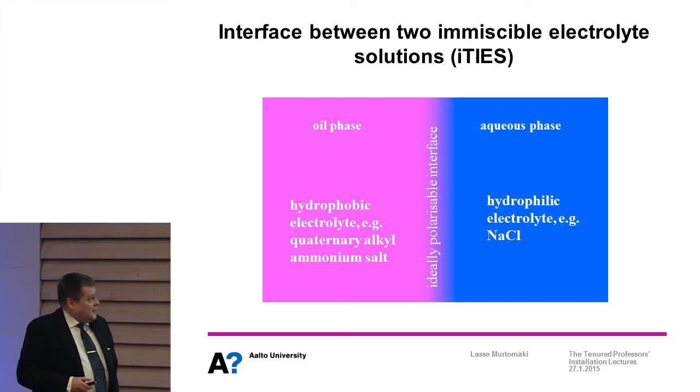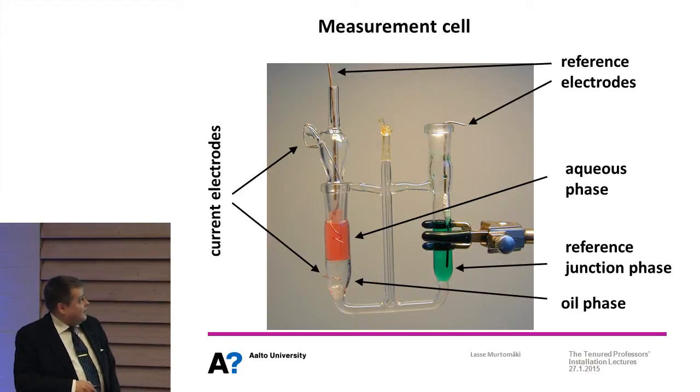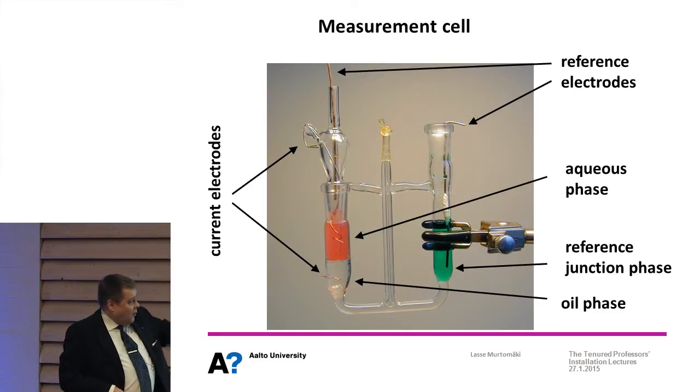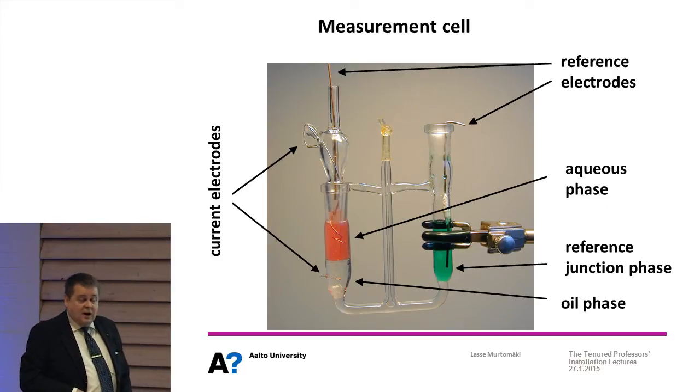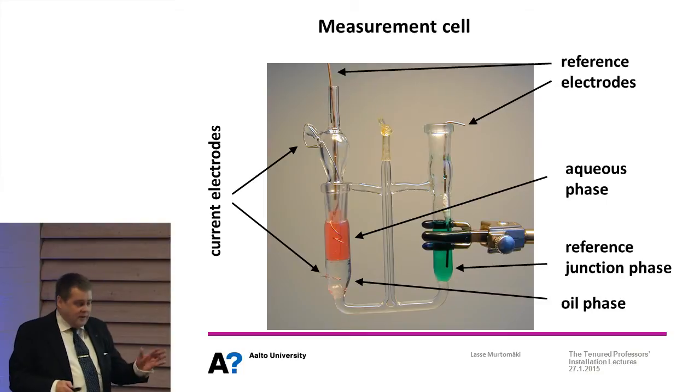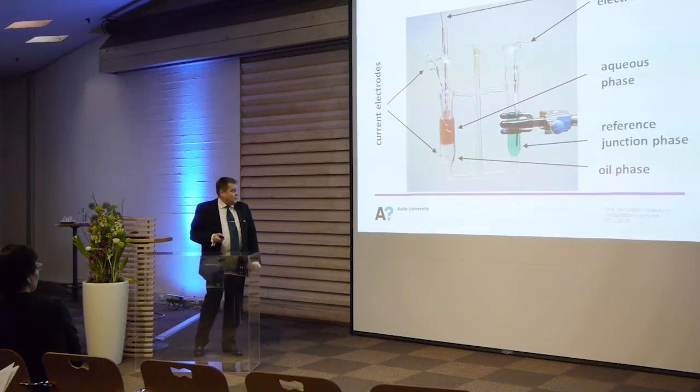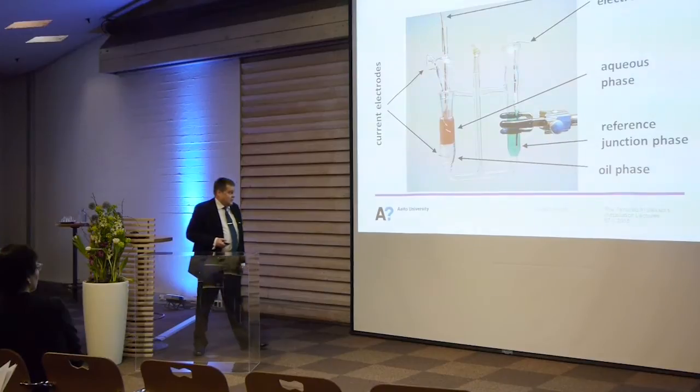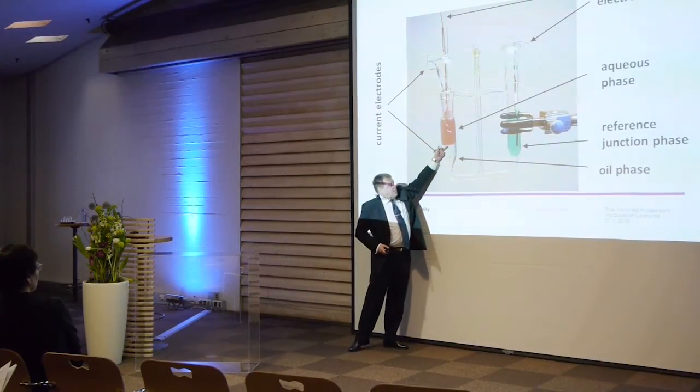If we do experiments with electrodes, the cell is something like this - the height is maybe five centimeters like a matchbox, and the interface is between this lower clear phase and this reddish phase. I just made some colors to make it more illustrative. We have platinum electrodes providing current and two reference electrodes controlling the potential. I skip the details because I have no time, but we are able to control the potential across this water-oil interface.